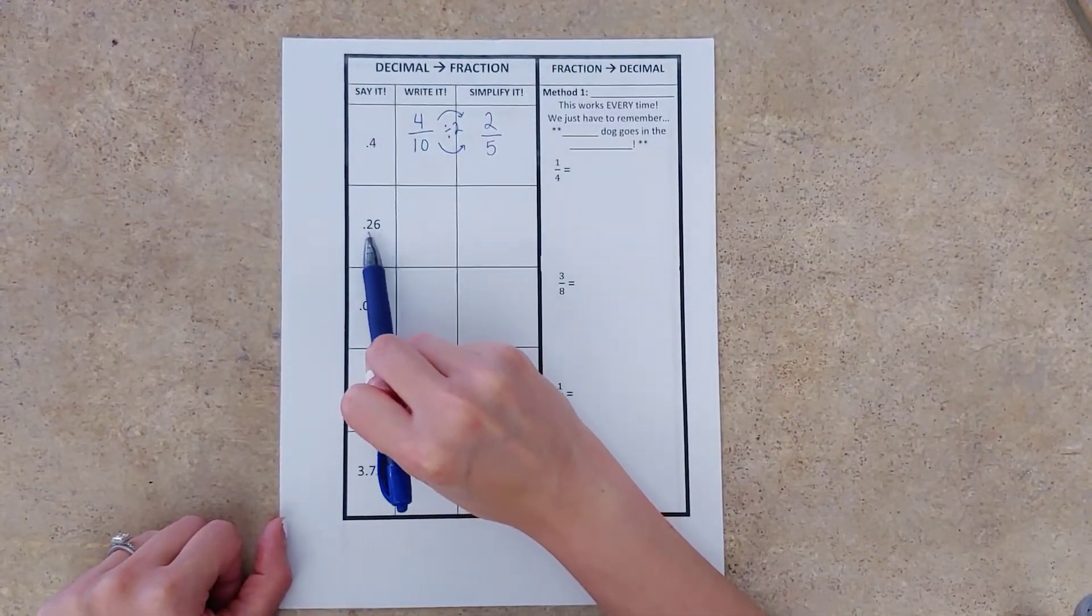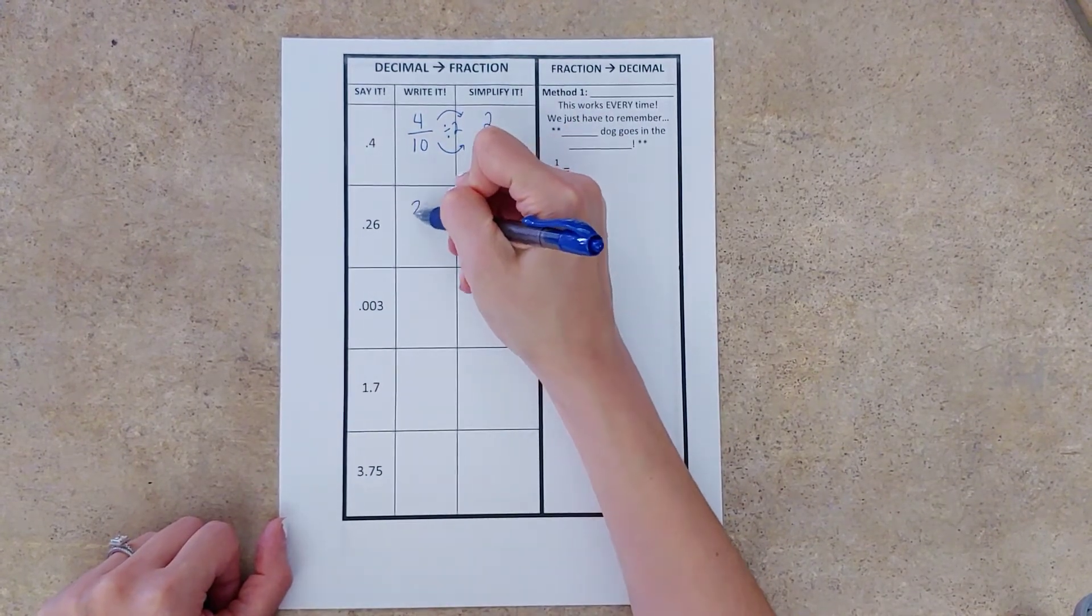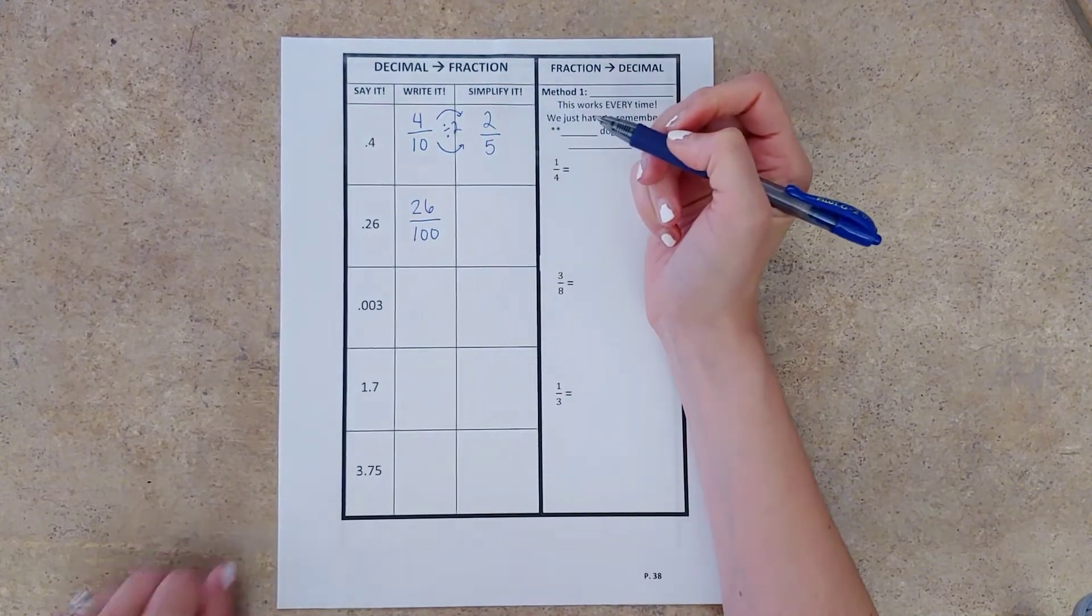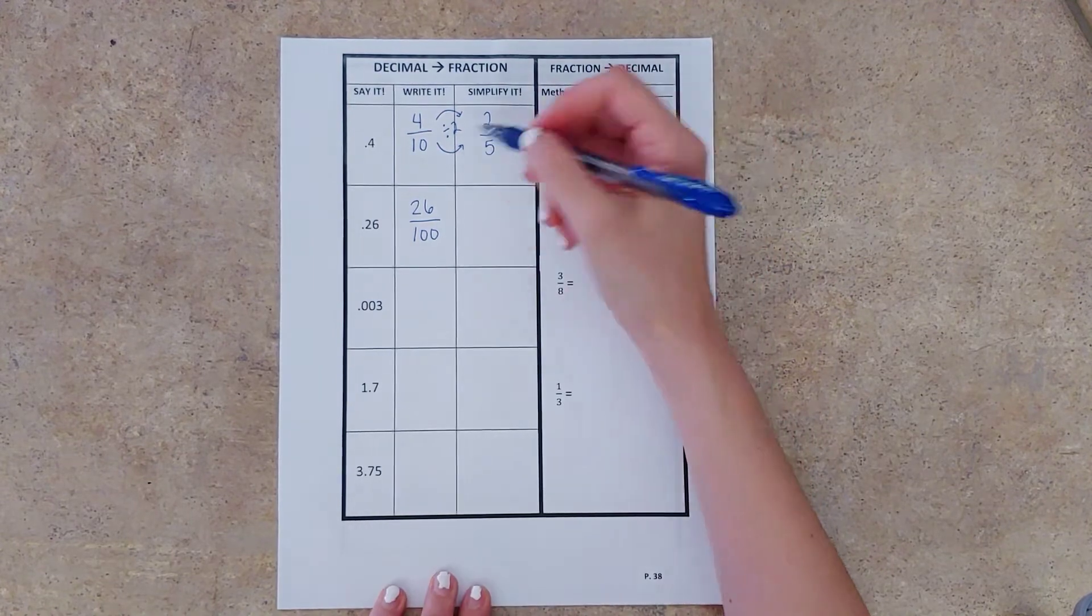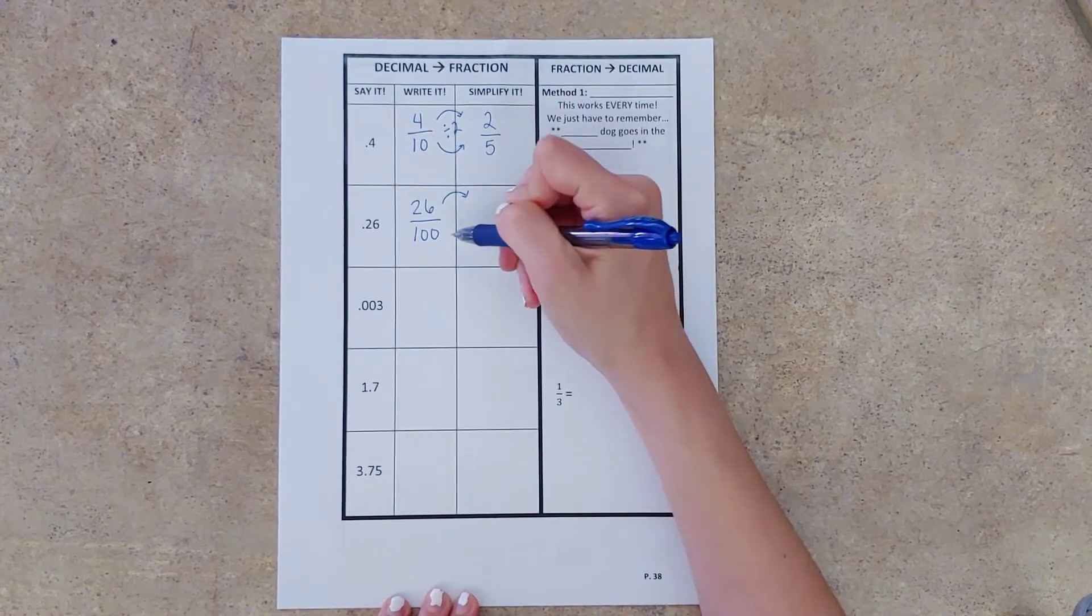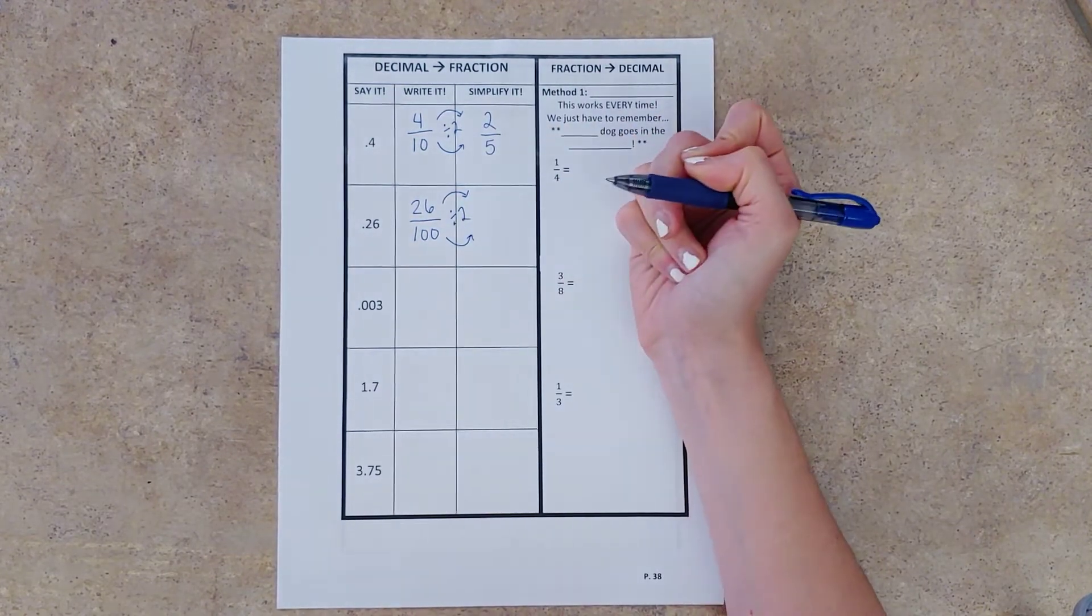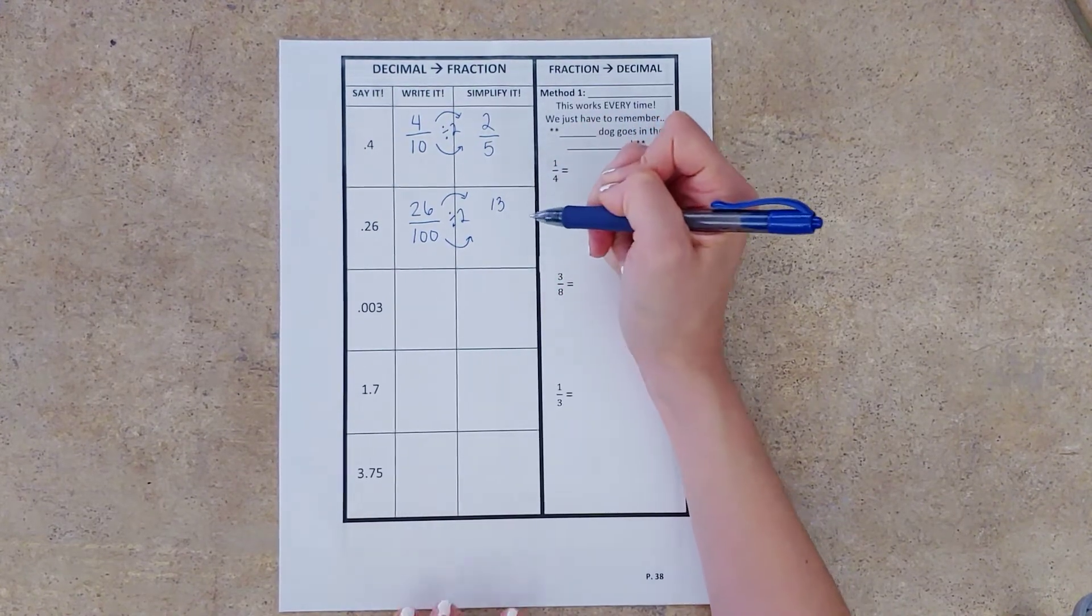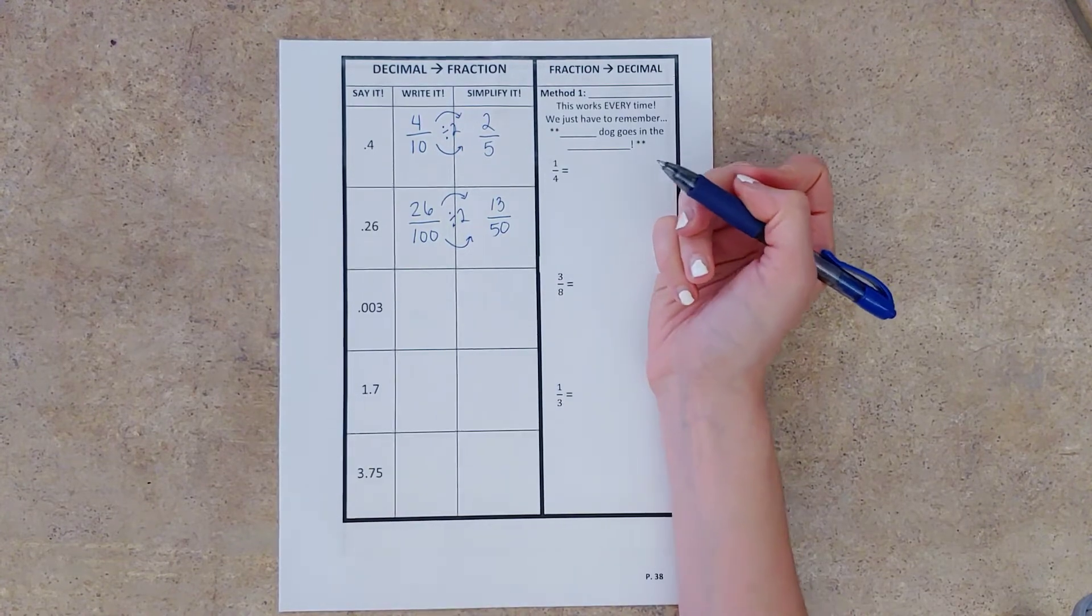Our next one, twenty-six hundredths, twenty-six out of one hundred. All right, and then we ask ourselves, can we simplify it? We can't always, but let's see. We've got twenty-six and one hundred, which are both even, and all even numbers can be divided by two. So half of twenty-six is thirteen, and half of one hundred is fifty, and that's as simple as we're going to be able to go.